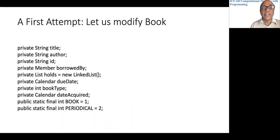Maybe a very naive approach, an initial approach, might be to have the Book class look like this: title, author, ID, borrowed by as fields, then more fields to store the list of holds, the due date for a book. Then we have to store the type of the book because the book could be either a periodical or a natural book.